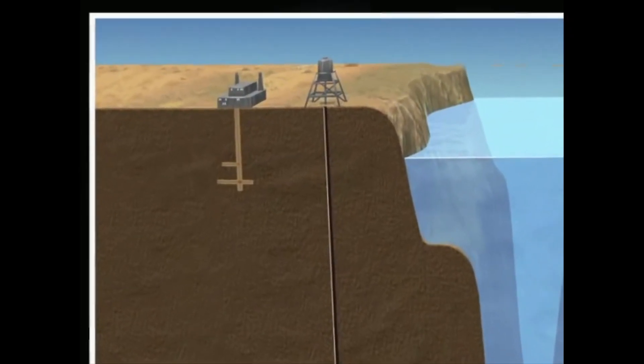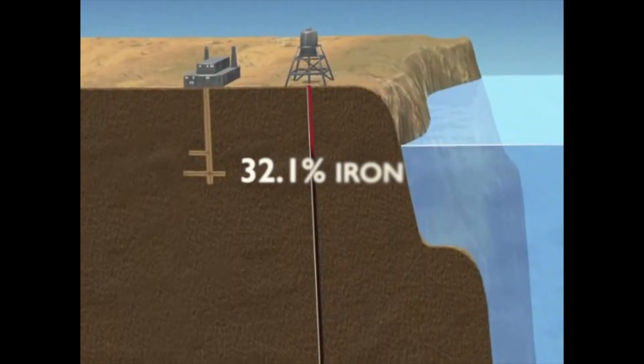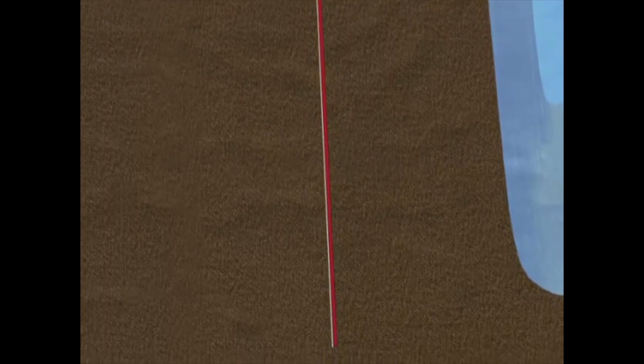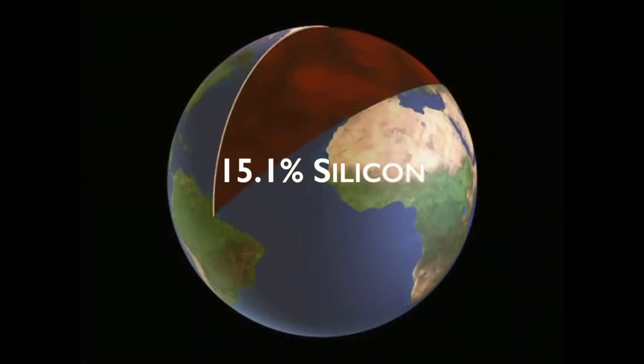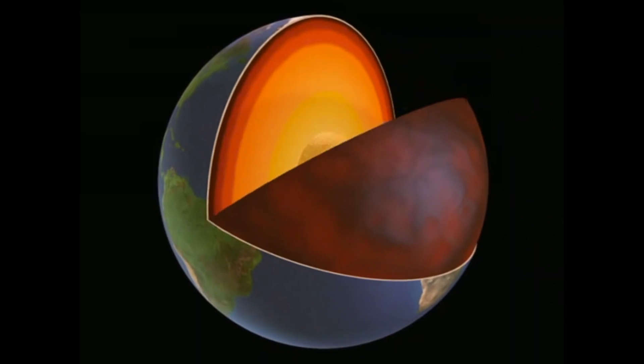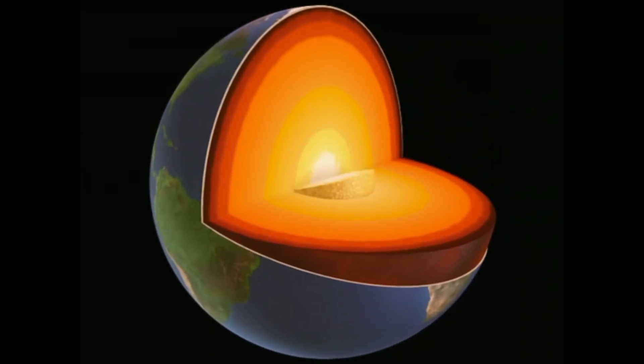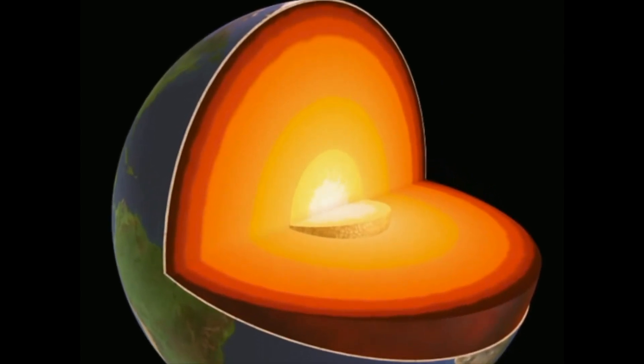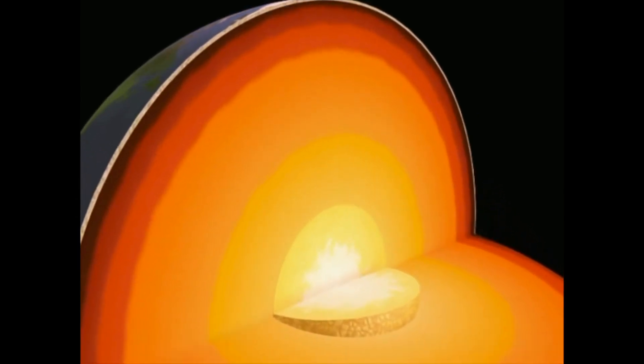Earth is mostly iron, oxygen, and silicon. If you could separate the Earth out into piles of material, you'd get 32.1% iron, 30.1% oxygen, 15.1% silicon, and 13.9% magnesium. Of course, most of this iron is actually located at the core of the Earth. If you could actually get down and sample the core, it would be 88% iron. And if you sample the Earth's crust, you'd find that 47% of it is oxygen.